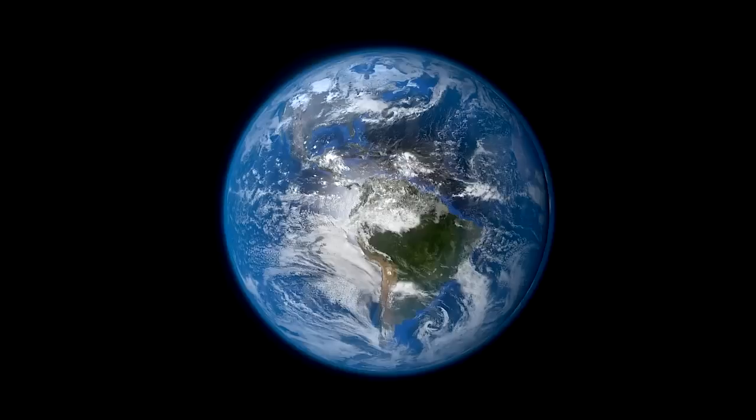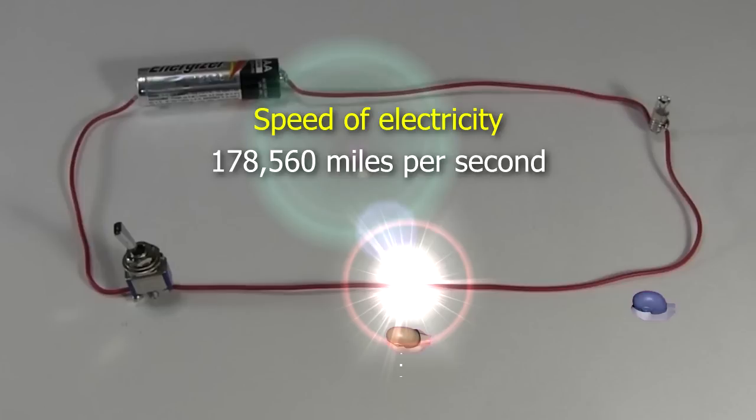So electricity moves at close to the speed of light. But the electrons don't, as we saw with our little racetrack.